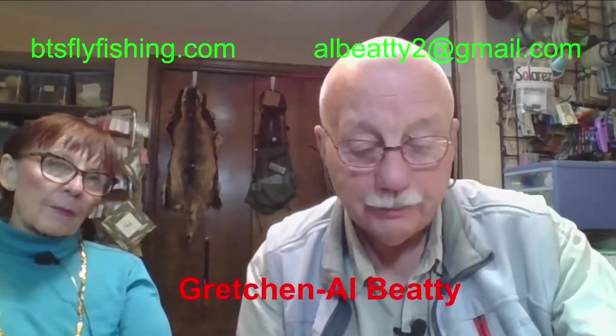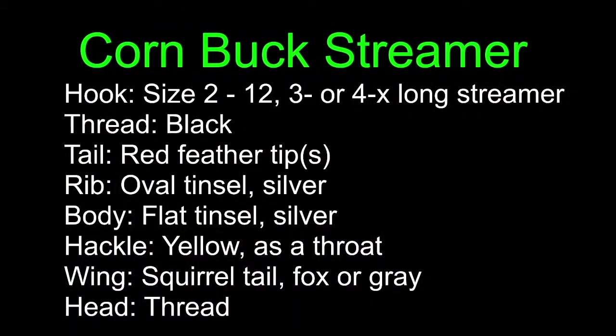The first one is the Corn Buck streamer. And you can see the size of the hook is whatever you want it to be, three or four X long. Thread's black, tail is red feather tips, rib is oval tinsel, the body is flat tinsel, hackle is yellow as the throat. You got a squirrel tail wing and you got a thread head.